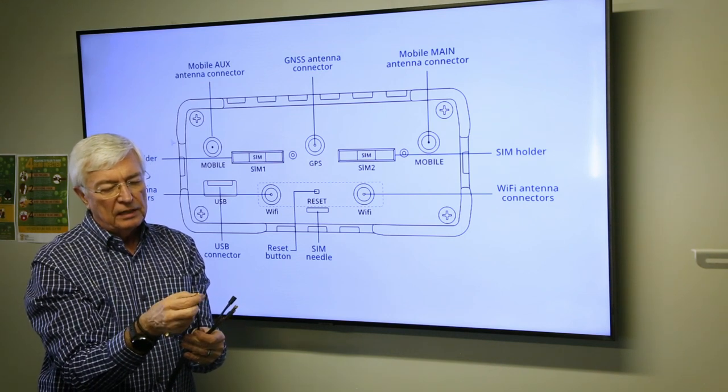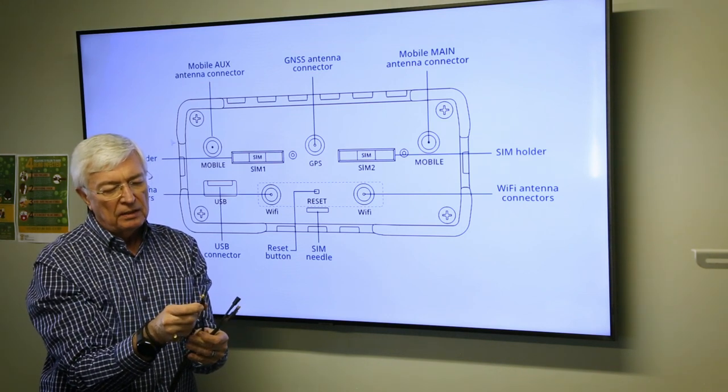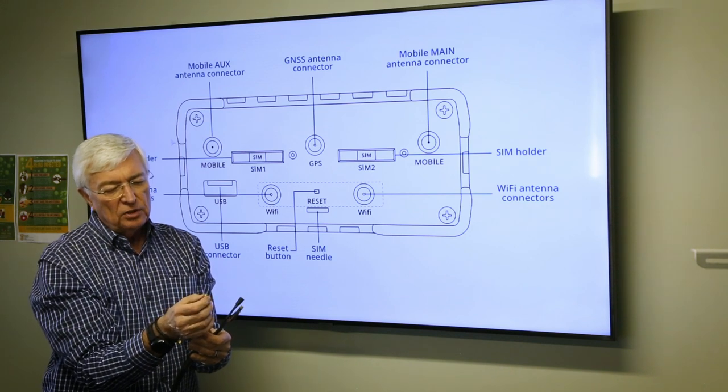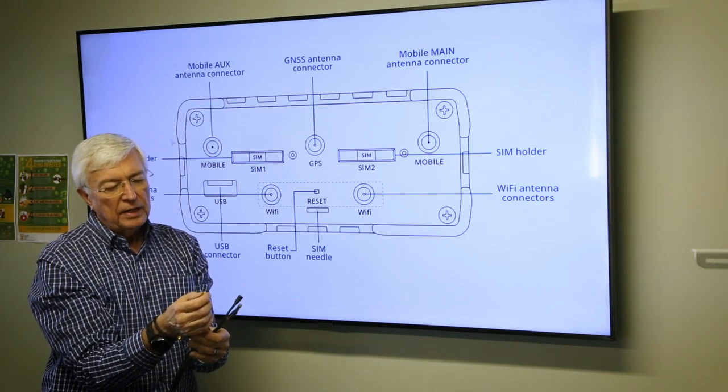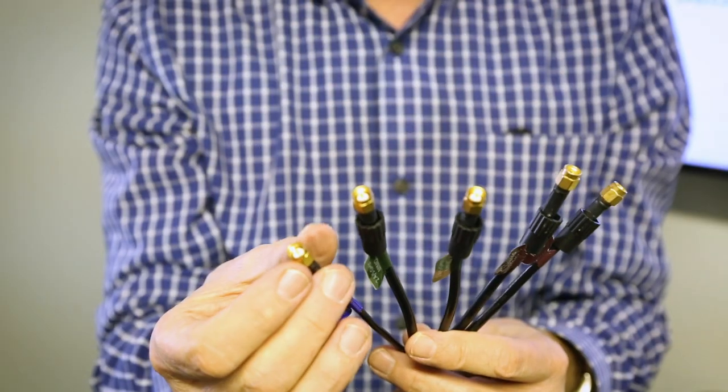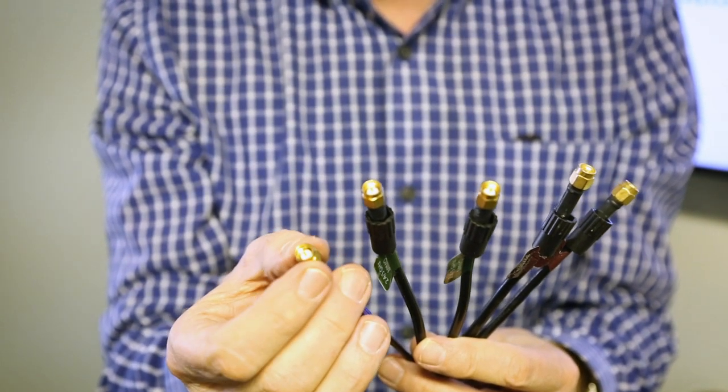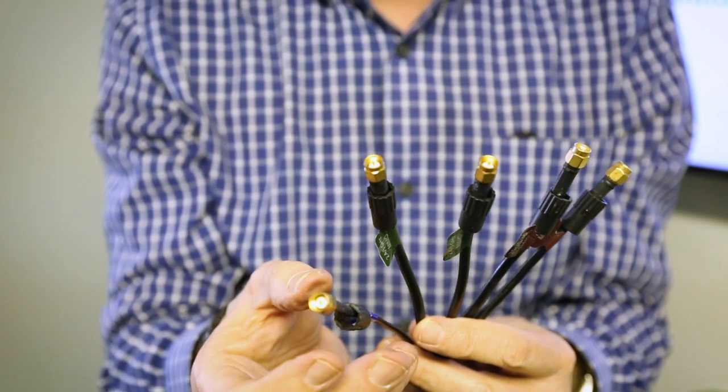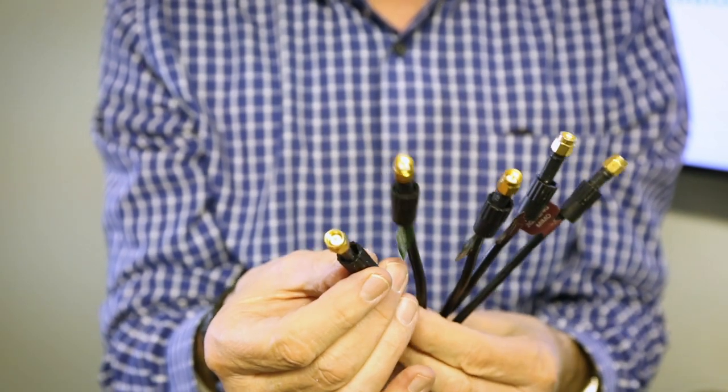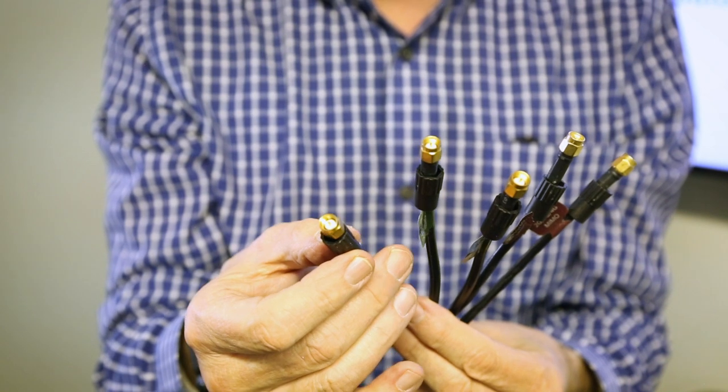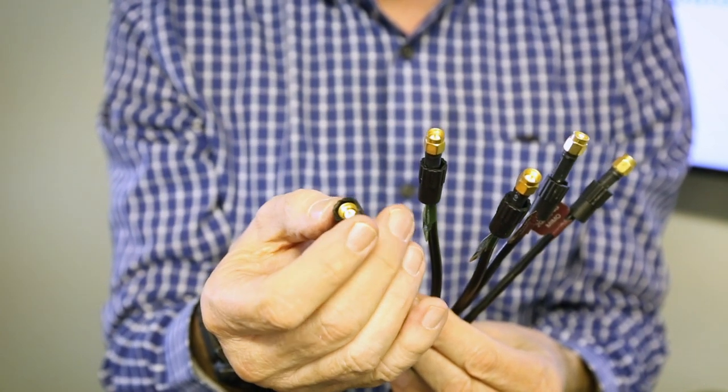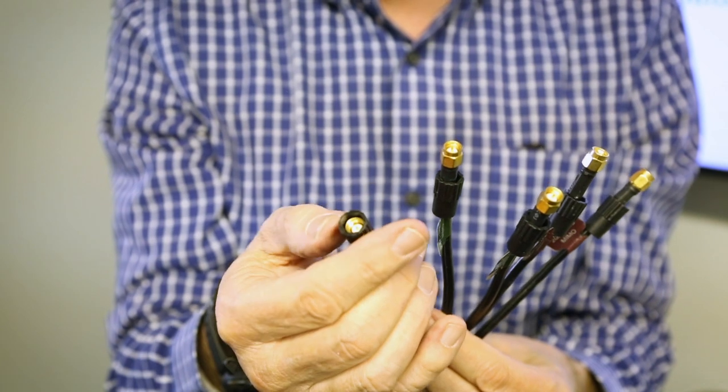Typically when you screw down your SMA connector, you would have found that it is very difficult to tighten these just using your fingers. When you slide the grip extender over it and then tighten it, you'll find that it's a lot easier to tighten it nicely onto the connector.